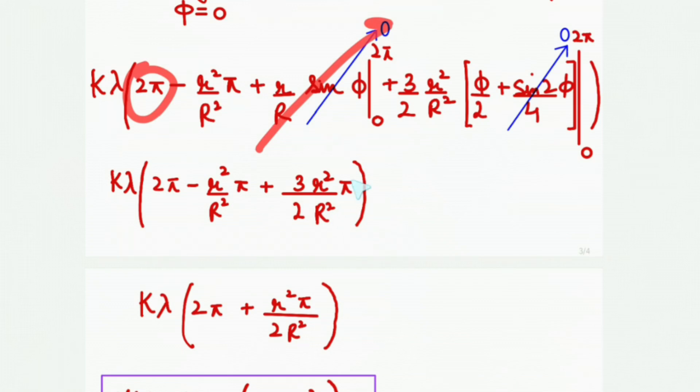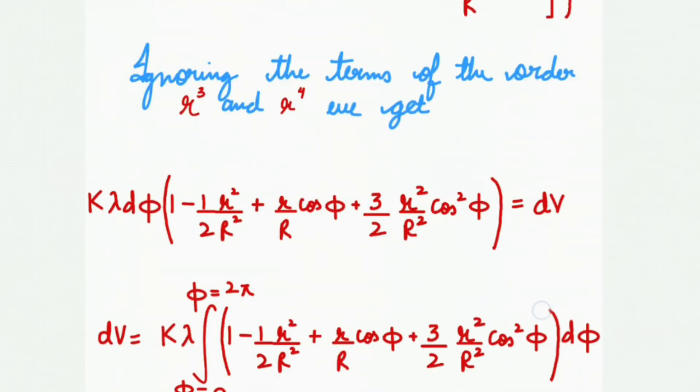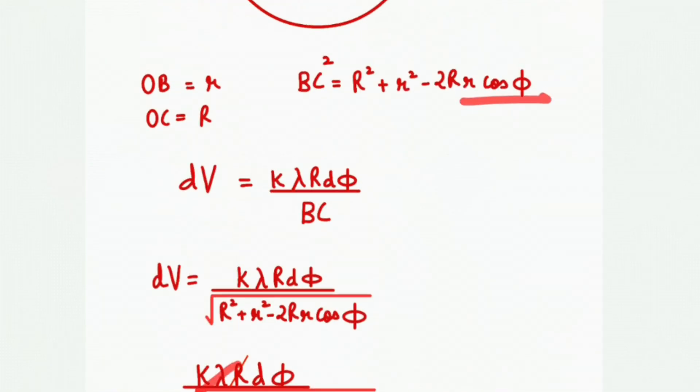So we'll get the potential is equal to k lambda pi multiplied by two small r square by capital R square. This is the expression for the potential at a distance r from the center in the plane of the ring.